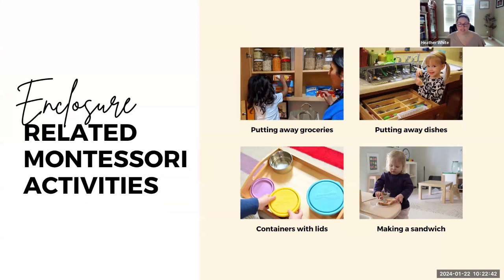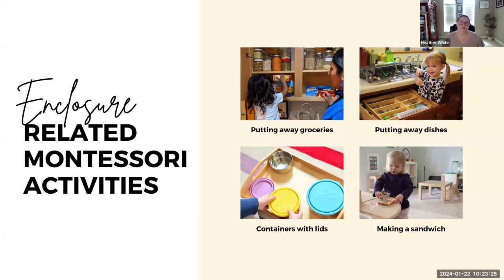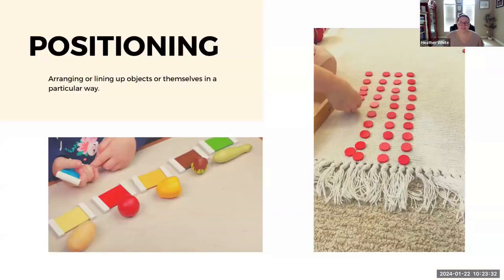Other activities for the enclosure schema include practical life activities in the kitchen like making a sandwich, and using the red rods to create mazes — which creates a border around themselves. This is also why many children love playing in cardboard boxes, as they're likely in that enclosure schema. If they want to close the lid and completely conceal themselves, it might be the enveloping schema — that's where we have to be detectives and closely observe to tell the difference.